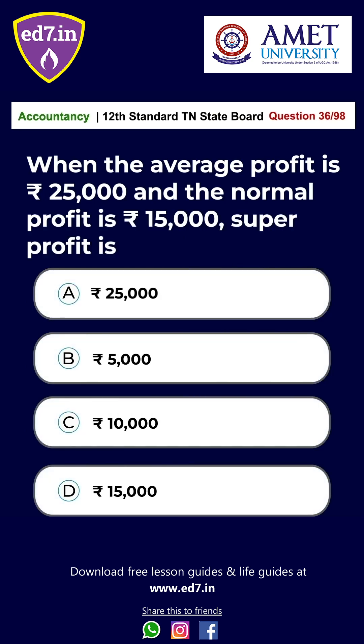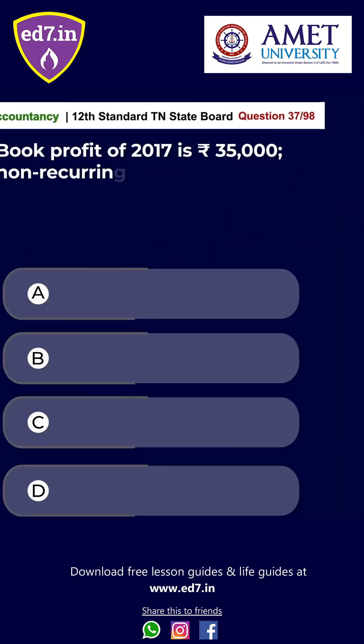Question No. 36: When the average profit is Rs. 25,000 and the normal profit is Rs. 15,000, super profit is — Option A: 25,000. Option B: 5,000. Option C: 10,000. Option D: 15,000. The answer is Option C — Rs. 10,000.